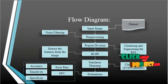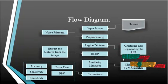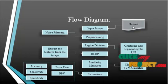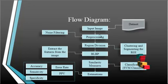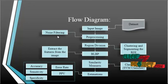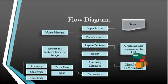Now we discuss the overall flow diagram for the process. First, the input image is taken from the dataset — a folder consisting of several input images. After selecting an input image, it undergoes pre-processing. The pre-processing step consists of noise filtering, where a Gaussian filter is applied. After applying the Gaussian filter, region division is carried out.